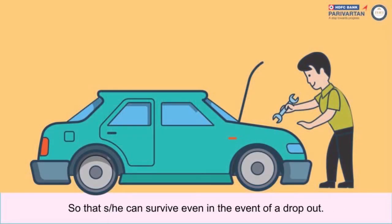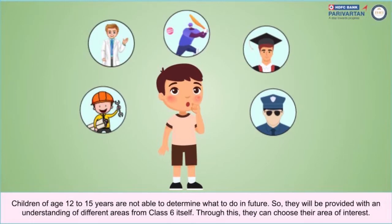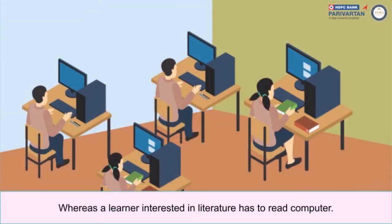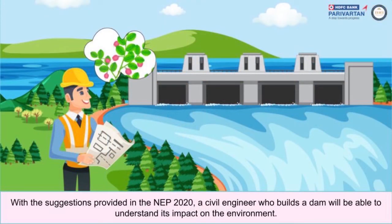This ensures that a learner can survive even in the event of a dropout. Children of age 12 to 15 years are not able to determine what to do in future, so they will be provided with an understanding of different areas from Class 6 itself, helping them choose their area of interest. With NEP 2020, a civil engineer who builds a dam will be able to understand its impact on the environment.